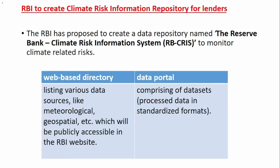The next initiative is about the Climate Risk Information Repository for lenders. RBI is insisting on climate risk information — whenever a loan is provided to any company or customer, the climate risk involved in that project must also be evaluated. Climate risk is a very big factor: for example, in agriculture loans, when there is a huge flood, output will not be there, farmers won't be able to pay the loan, and NPA will increase.